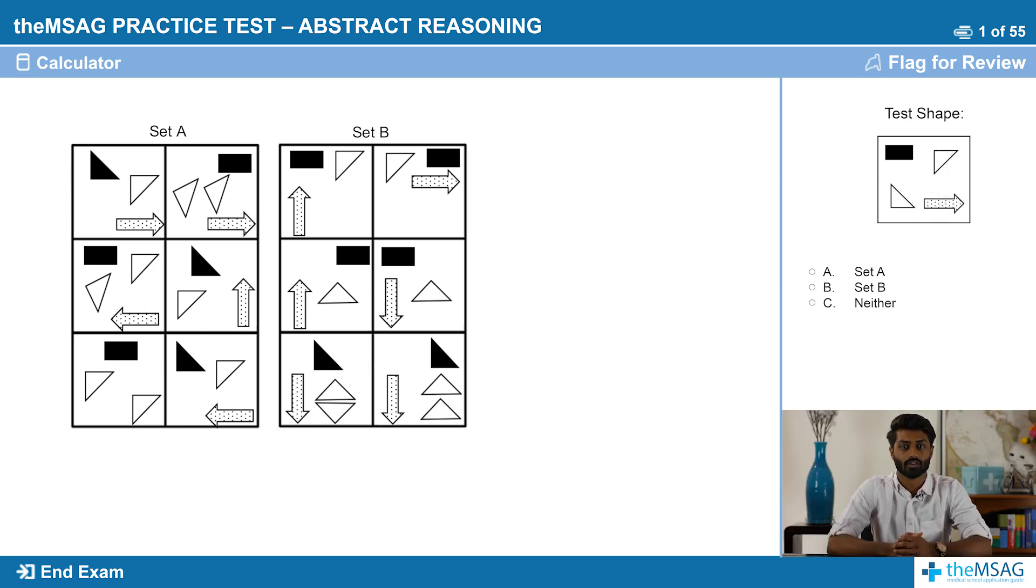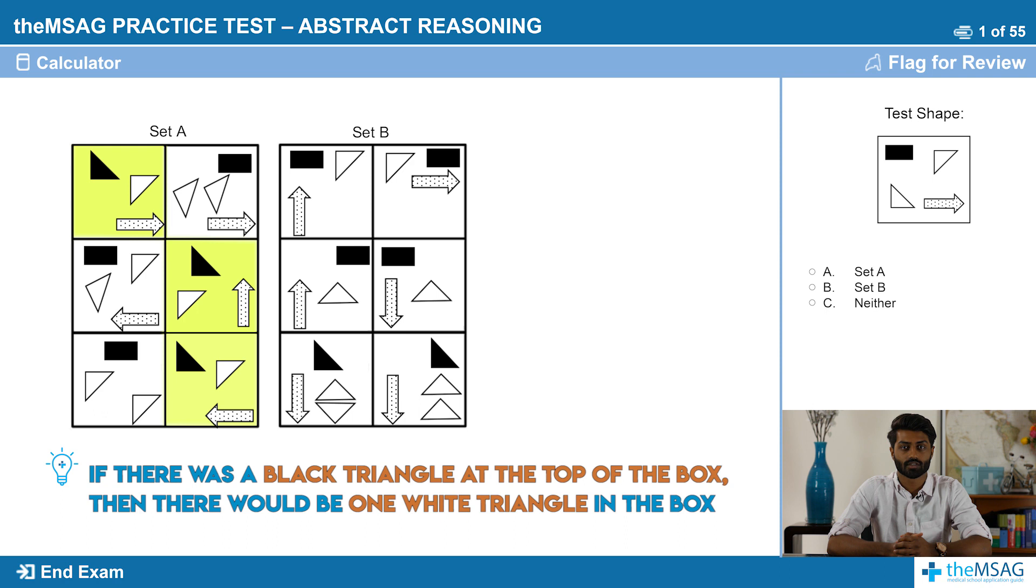The correct answer was that the test shape belonged in set A. But what was the pattern? We had a conditional pattern for these sets. For set A, if there was a black triangle at the top of the box then there would be one white triangle in the box. If there was a black rectangle at the top of the box then there would be two white triangles in the box.